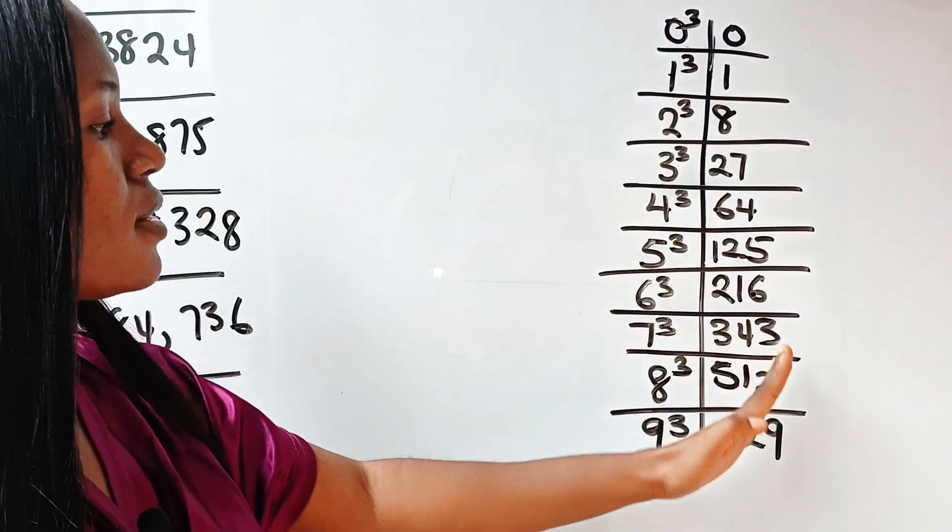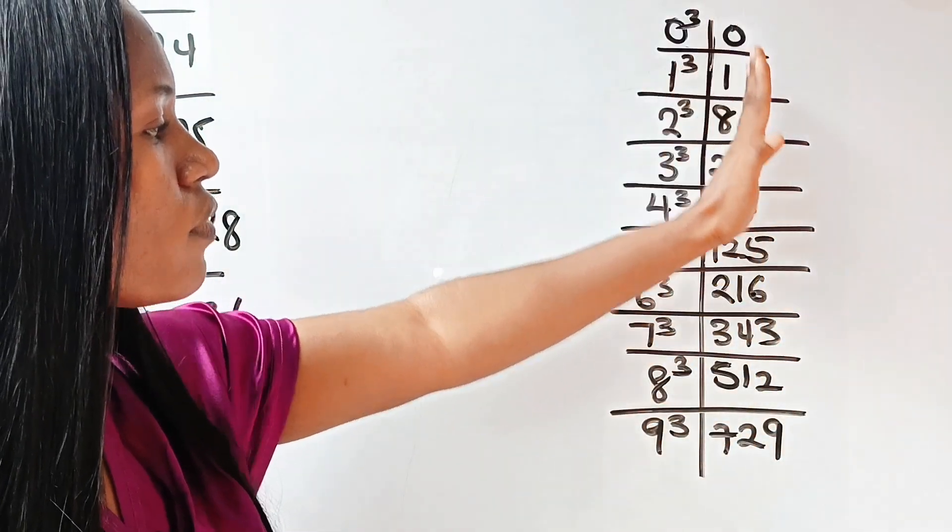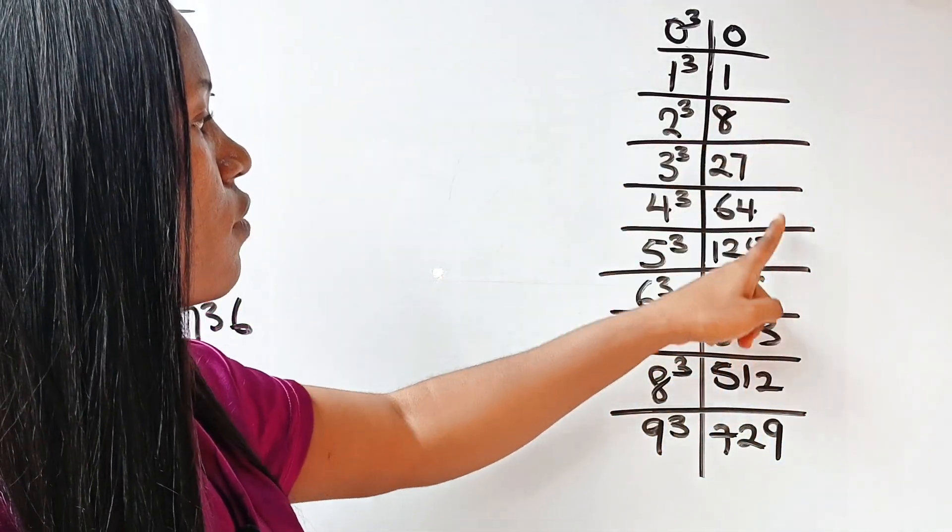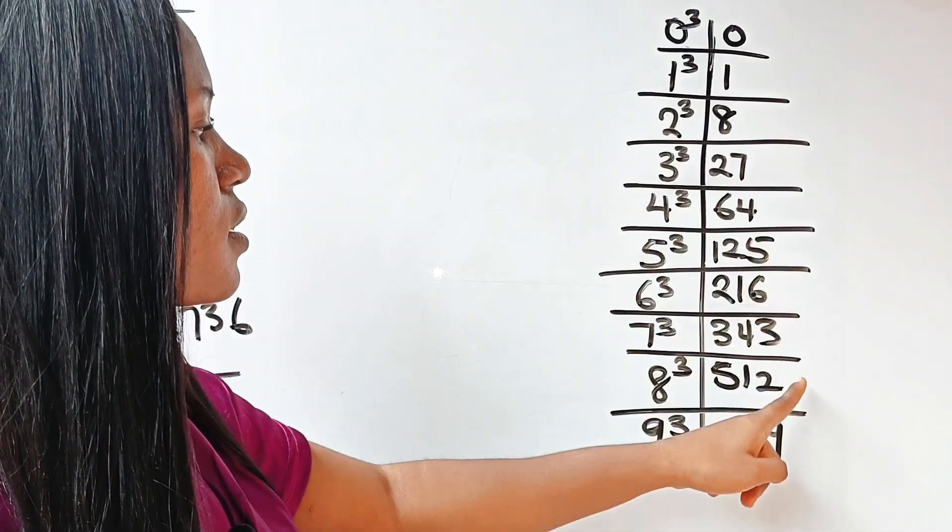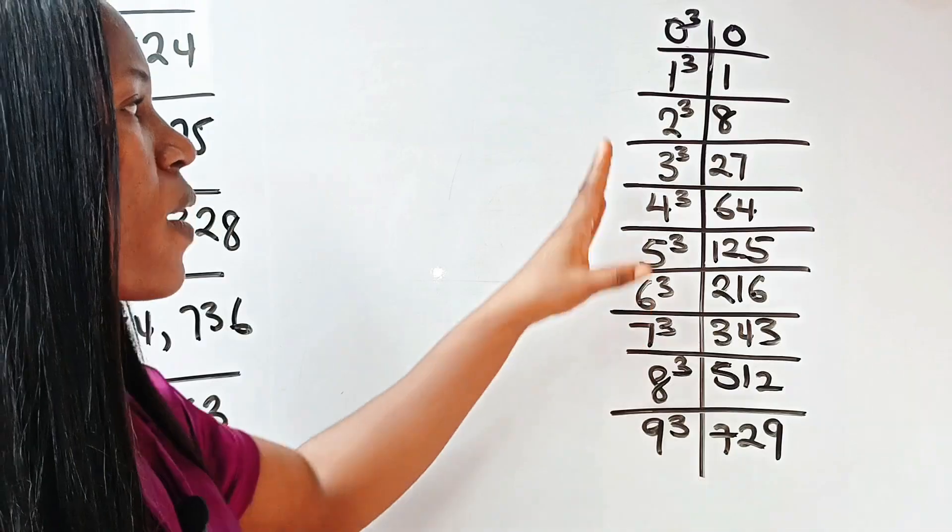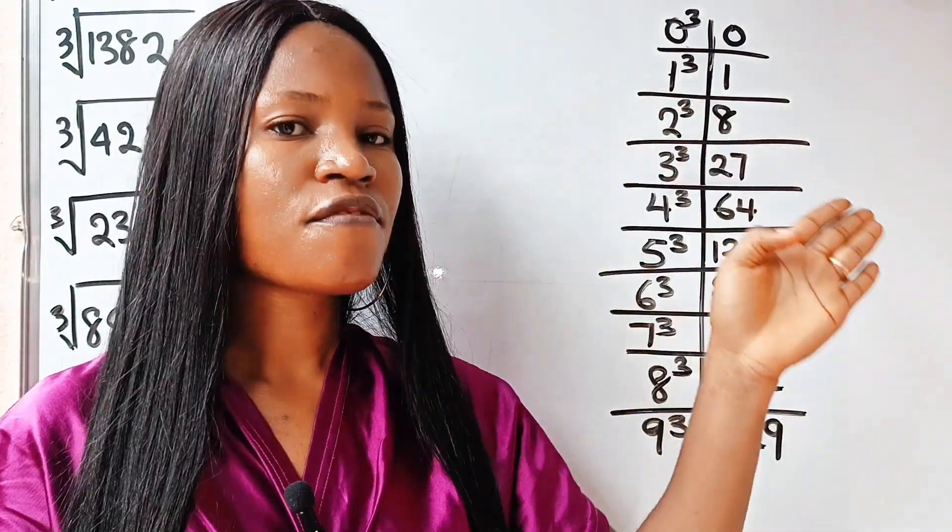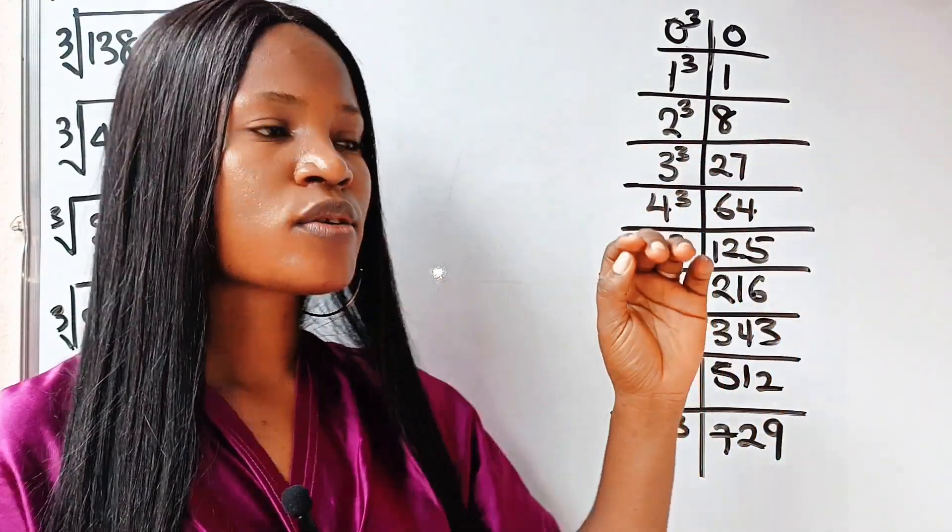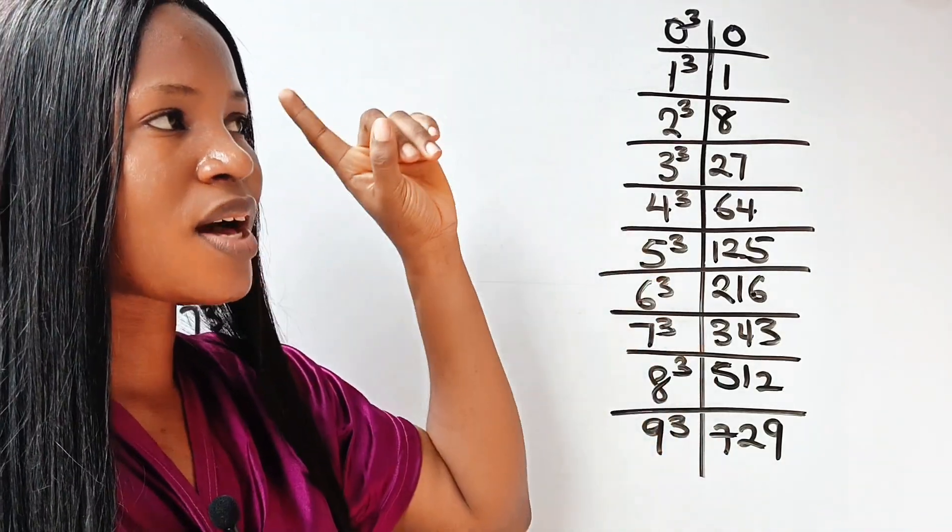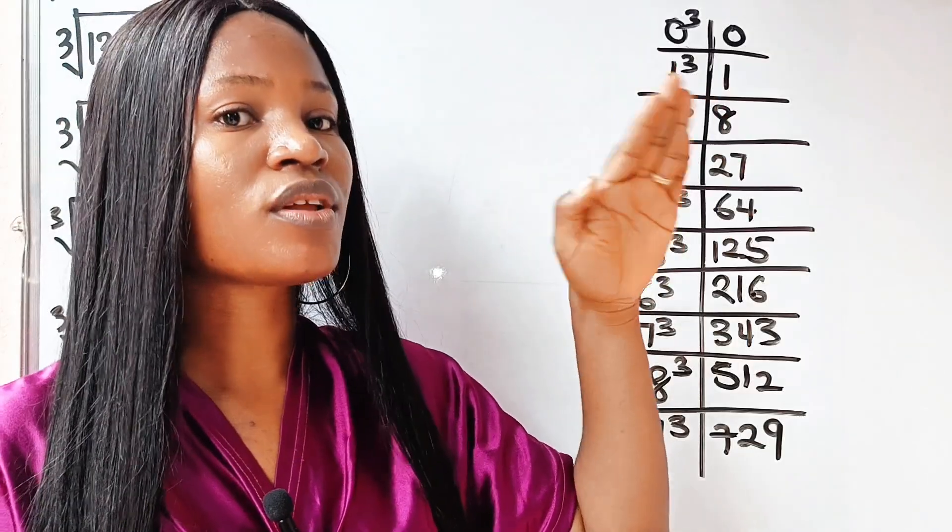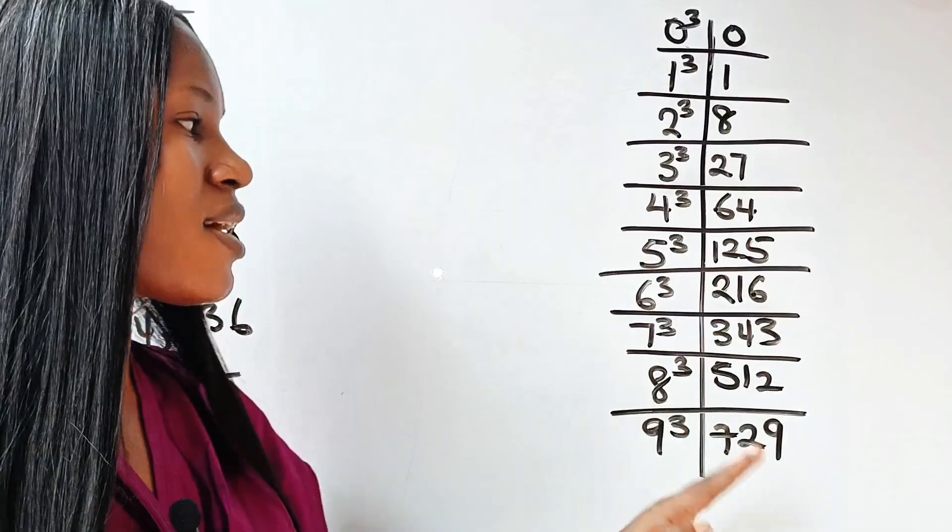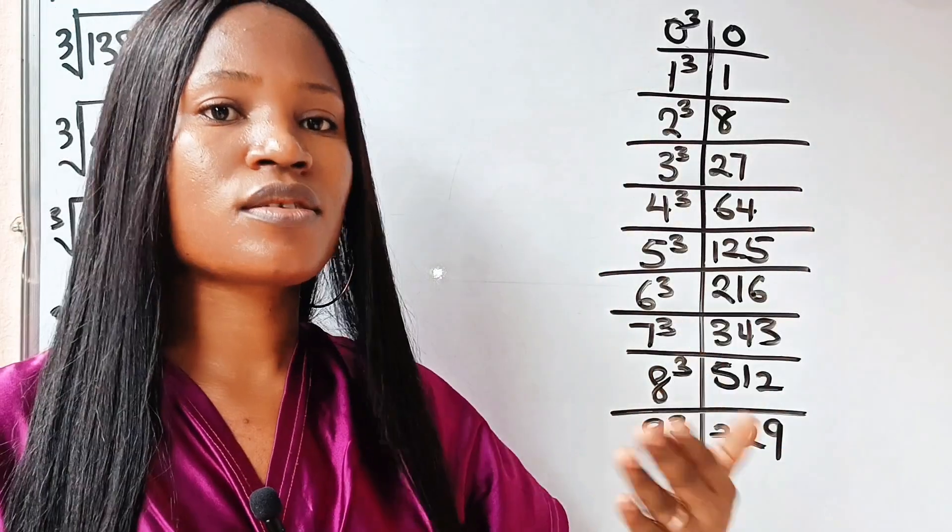Just pay attention and grab the point I'm about to make concerning this particular point. Now, what am I trying to say? Look at the end of these numbers. All of them, they have different numbers that end them. This ends with 1, 8, 7, 4, 5, 6, 3, 2, and 9. Different numbers. And that is why finding cube root is easier and faster than finding square roots.